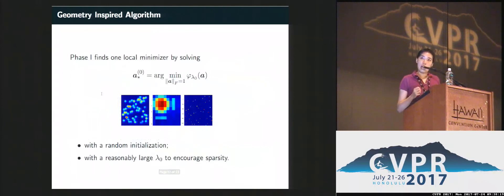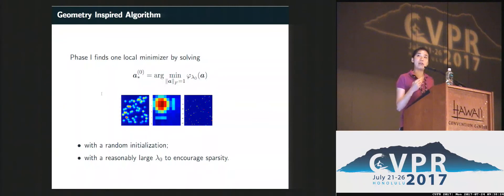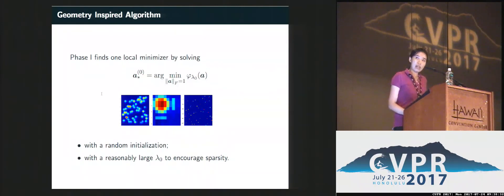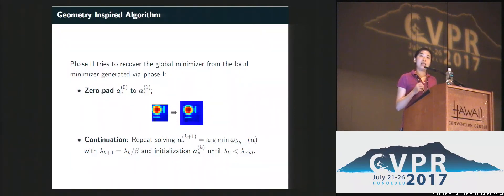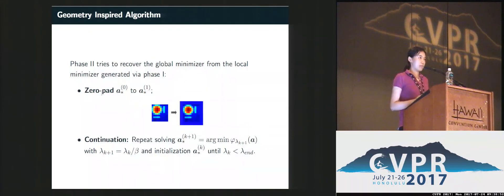This motivates a natural two-step algorithm. First, we find one of the local minima using random initialization with a large enough lambda. Second, we find the global optimum from this local minimum by zero-padding the shift-truncation, increasing its dimension to give the optimization algorithm enough freedom to fill in the missing truncated entries. This algorithm performs well on the applications we mentioned.